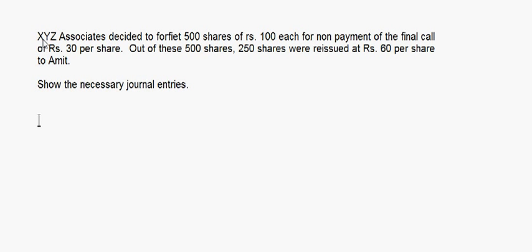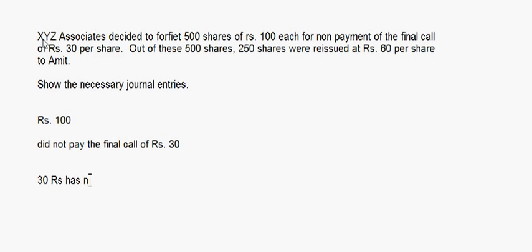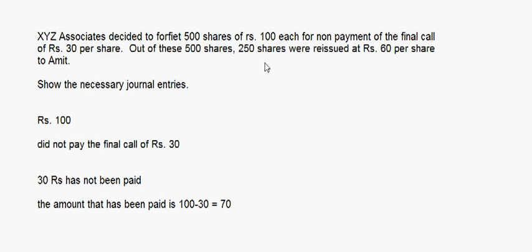Now see, the company has decided to forfeit 500 shares of Rs. 100 each. The value of the share is Rs. 100. This shareholder holding 500 shares did not pay the second and final call of Rs. 30 — that means Rs. 30 has not been paid. And the amount that has been paid is 100 minus 30, which is Rs. 70. So first of all, I will write the forfeiture entry for this. Share Capital Account debit — this is 500 into 100, which is 50,000.